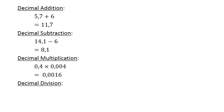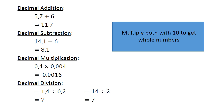Decimal division: 1.4 divided by 0.2. Multiply both by 10 to get whole numbers: 14 divided by 2 equals 7.